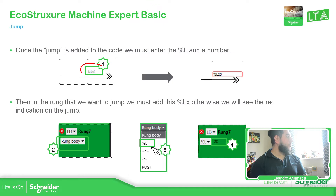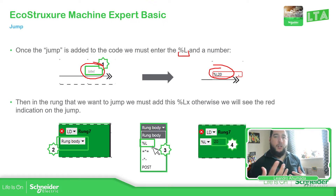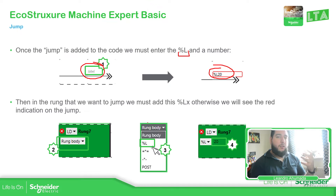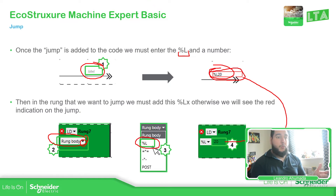Once we add that element, we should be able to see the label field here, and we just need to assign something. That something is a percentage L plus a number. As you can see, as soon as you put this in the code it should show in red, because it means that even if you define the label, there is no indication in your code of that label. So you need to assign that. In order to assign it, in the left part of our rung we should be able to see the rung body, and if we select over there we should be able to see the percentage L indication. Here in the percentage L we should be able to assign the number, so it will link this one with this one, and this error is no longer visible.